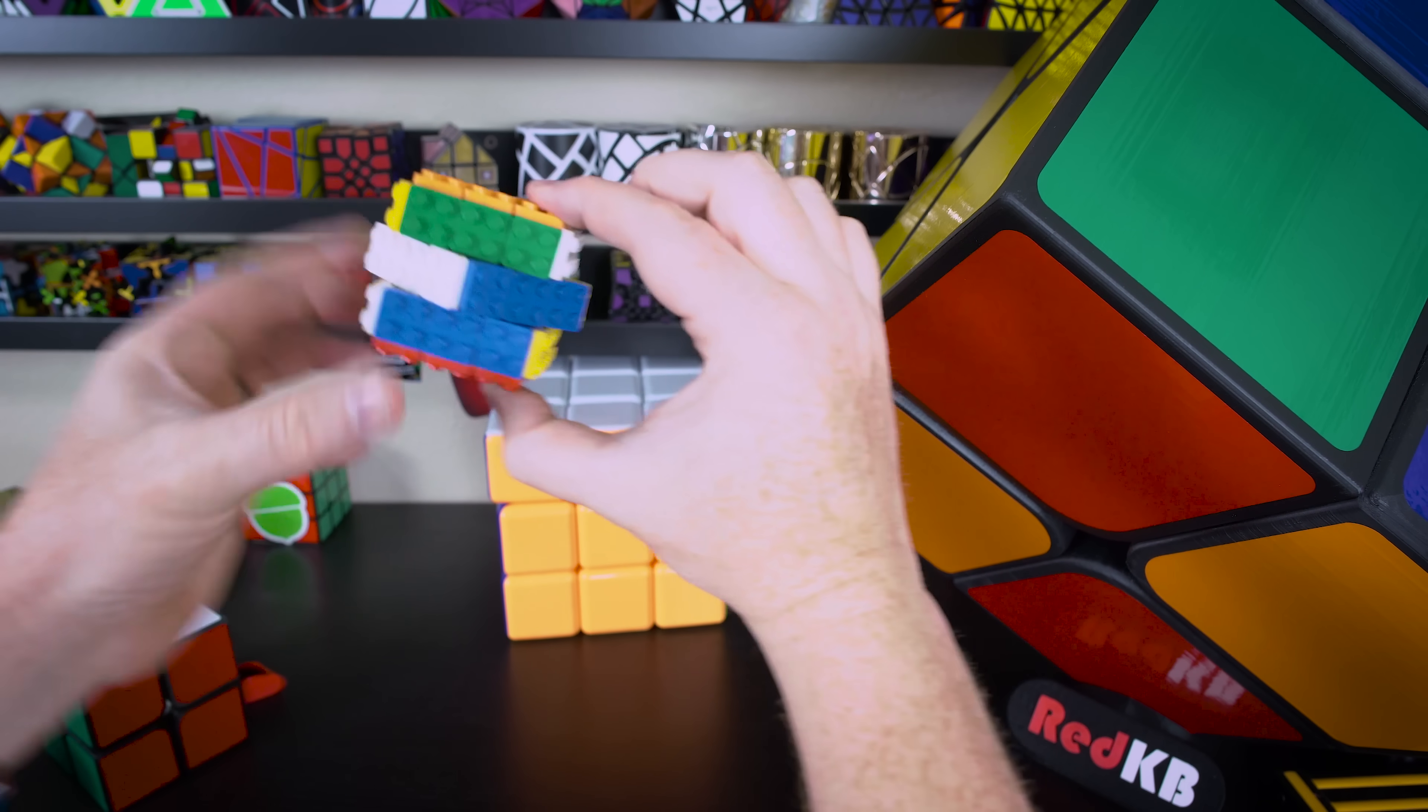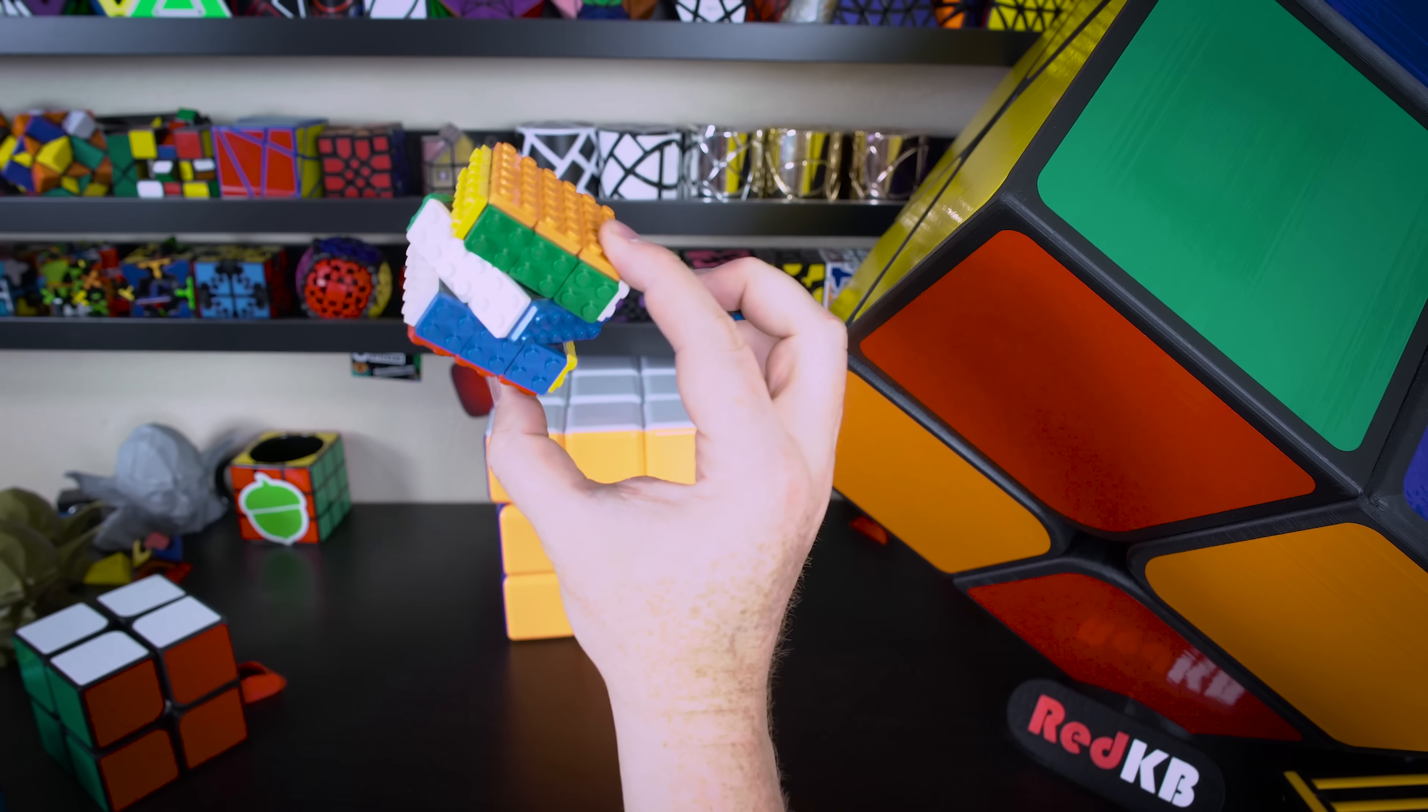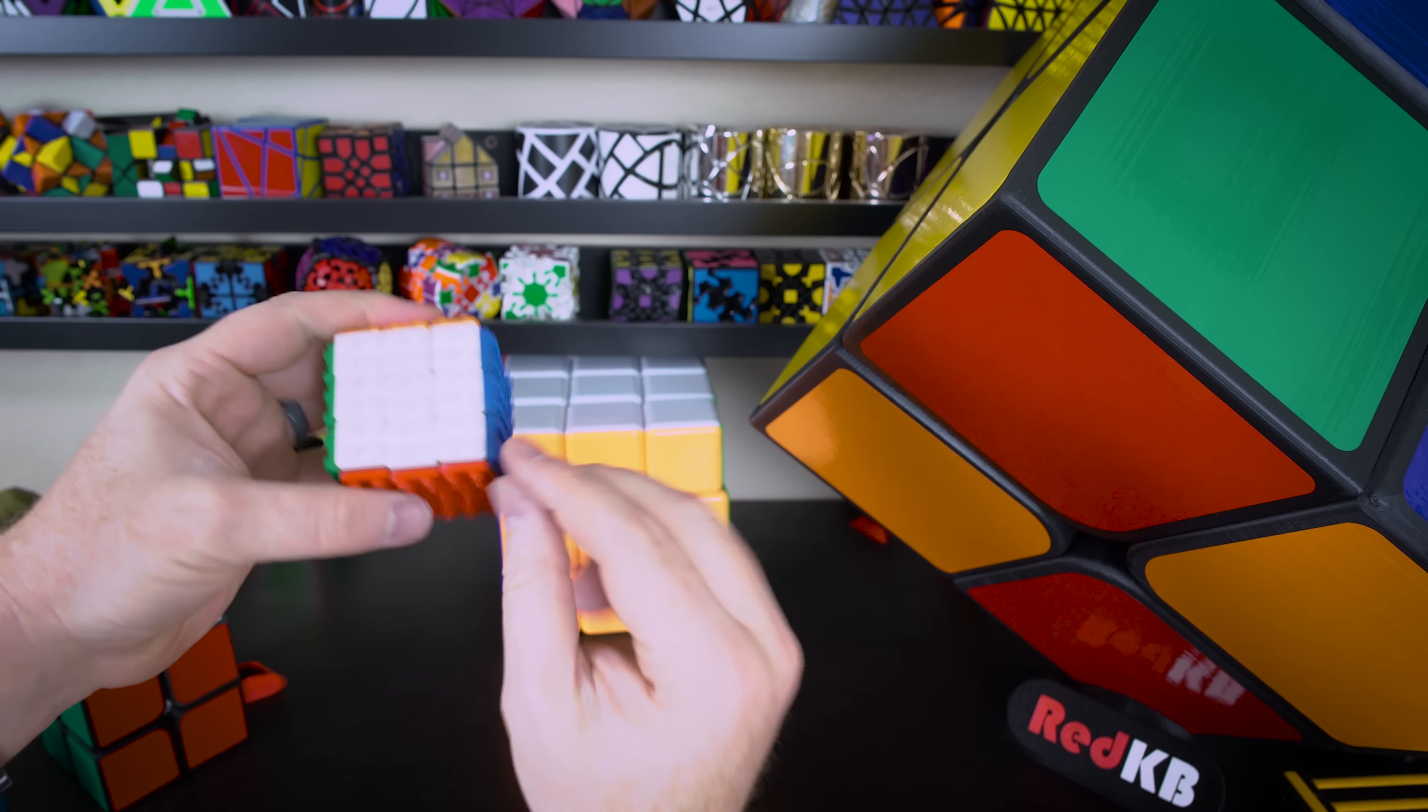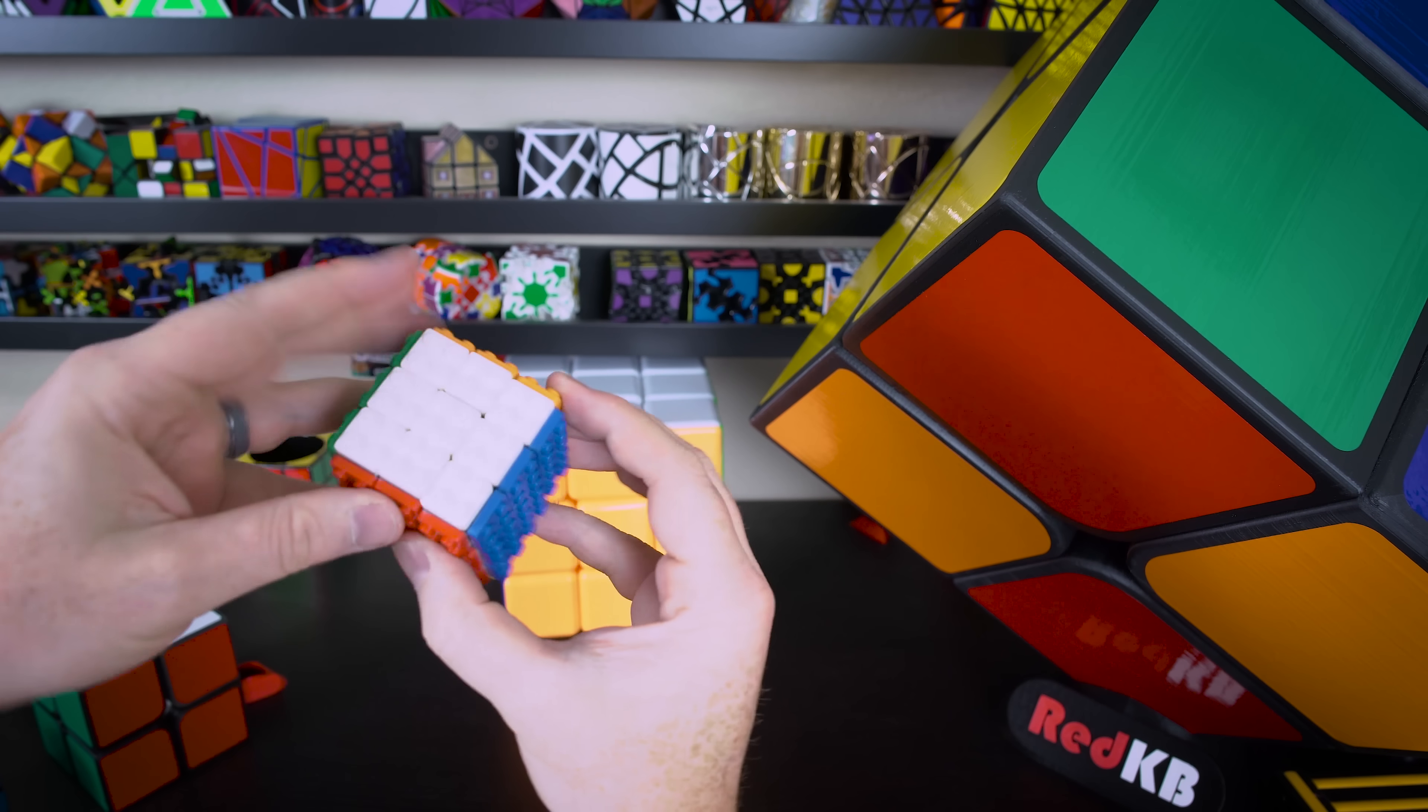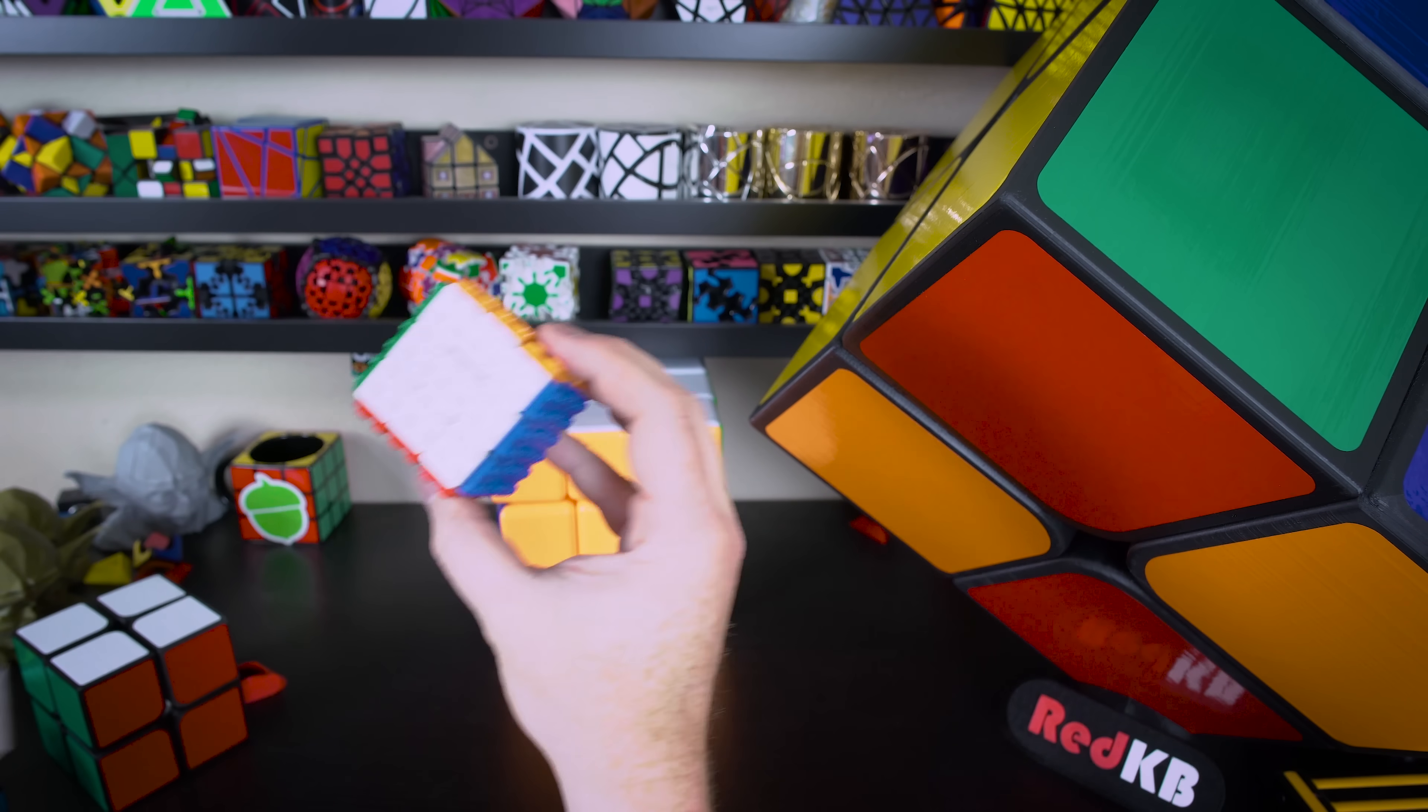The thing you have to worry about is if you only have extensions on the corners, so you're only holding the corners when you turn the puzzle, what happens is sometimes this will happen and the center layer of the 3x3 will kind of be misaligned. So you have to deal with that somehow.